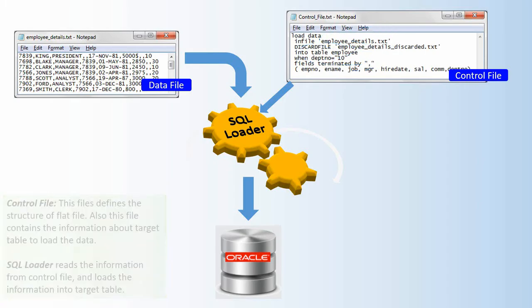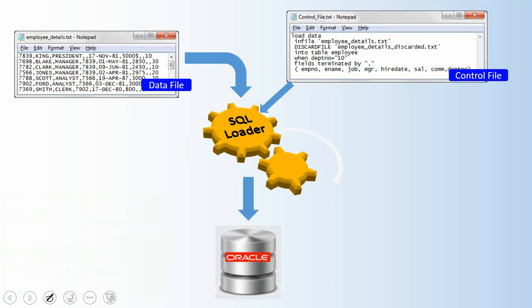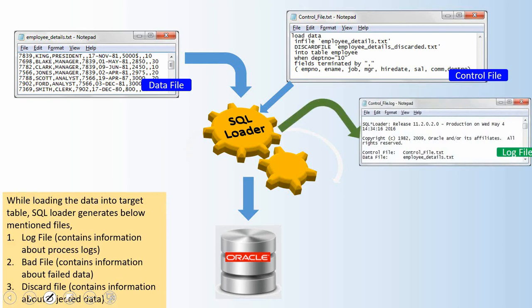During the loading process, SQL Loader generates three output files. The first is called the log file. This is a log of what is happening — for example, if you are loading a hundred records and there is any issue with any record, when a particular record fails to insert, that information is captured here. The log file is the first place to check whether your load was successful, showing number of records successfully loaded and any failure details.